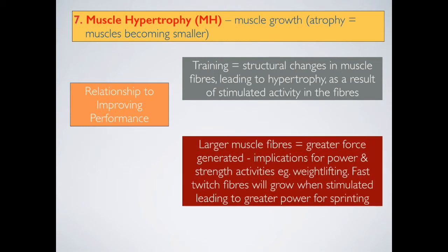As a result, larger muscle fibres can generate greater forces, and this has implications for power and strength activities such as weight lifting. Fast-twitch fibres, which we'll cover a little bit later in this presentation, will also grow when stimulated, leading to greater power for sprinting. When we think about muscle hypertrophy, it's important to understand applying progressive overload to a resistance training program — if we add increased load, increased sets and repetitions, that's going to lead to muscle hypertrophy.